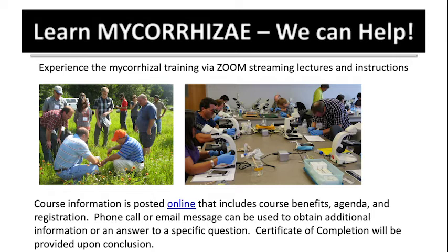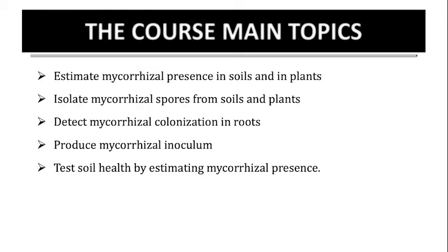All this information for this course is available online and you can access more information there. We have the outline topics and all the information you need online. The topics we are going to cover include: estimating mycorrhizal fungi presence in the soil and plants, isolating mycorrhizal spores from the soil, giving an estimation of how healthy your soil is and how many mycorrhizal spores you have, and detecting mycorrhizal fungi in the roots by processing and preparing the roots, putting them on a slide, and observing them under a microscope.